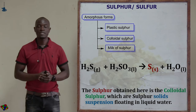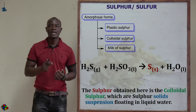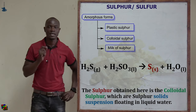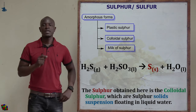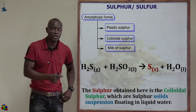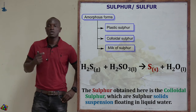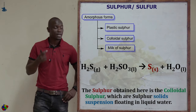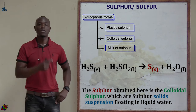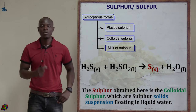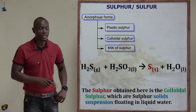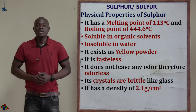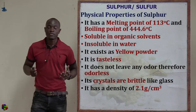Colloidal sulfur is obtained by reacting hydrogen sulfide with sulfurous acid. If you react hydrogen sulfide together with sulfurous acid, you obtain colloidal sulfur. And finally, we have milk of sulfur. Now let's look at the physical properties of sulfur.